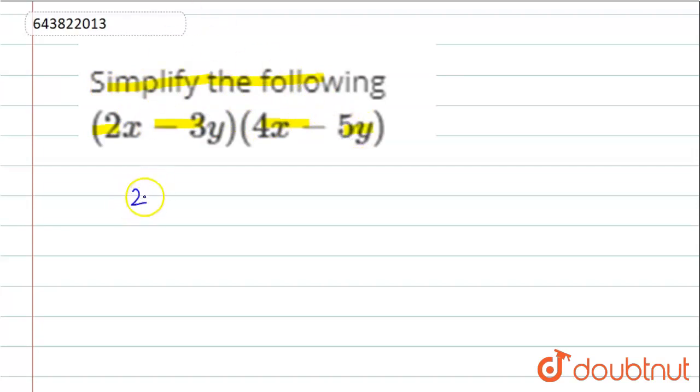Now we multiply (2x - 3y) into (4x - 5y). First we multiply 2x into (4x - 5y), minus 3y into (4x - 5y).